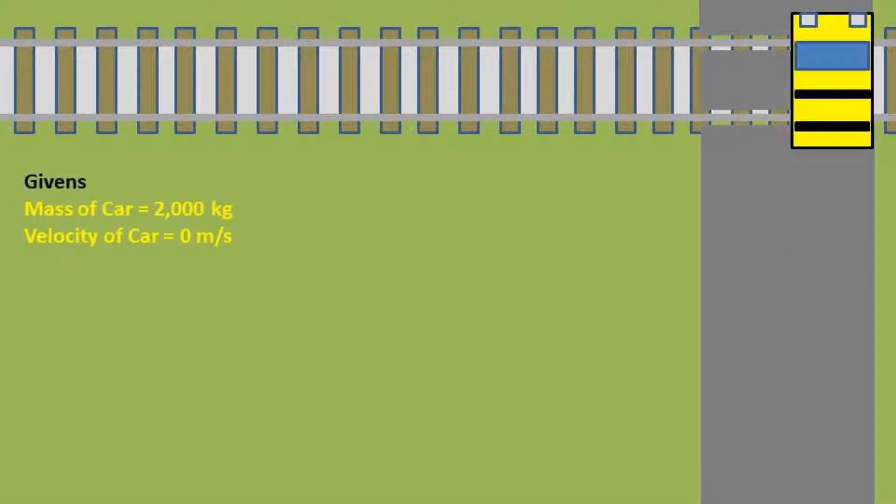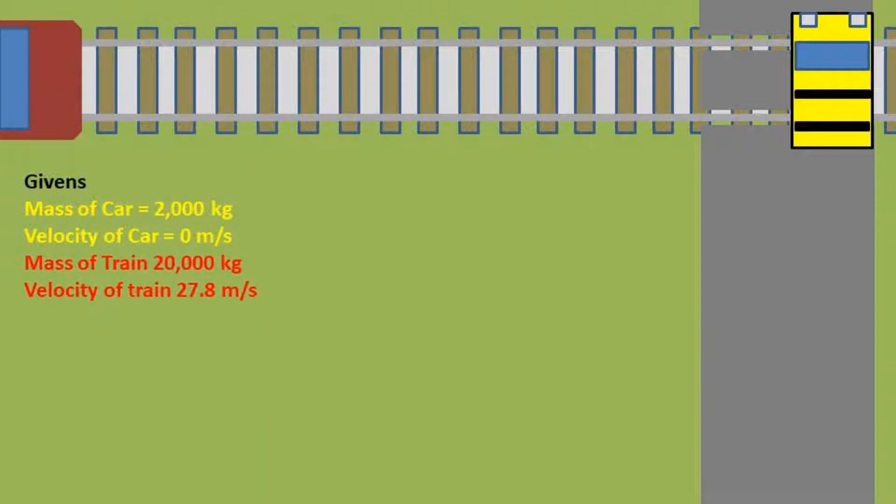So we have a car with a mass of 2,000 kilograms and it is traveling at 0 meters per second and is stuck on the railroad track. There is a train coming with a mass of 20,000 kilograms and it is traveling at 27.8 meters per second. This is equivalent to about 100 kilometers per hour or about 60 miles per hour.